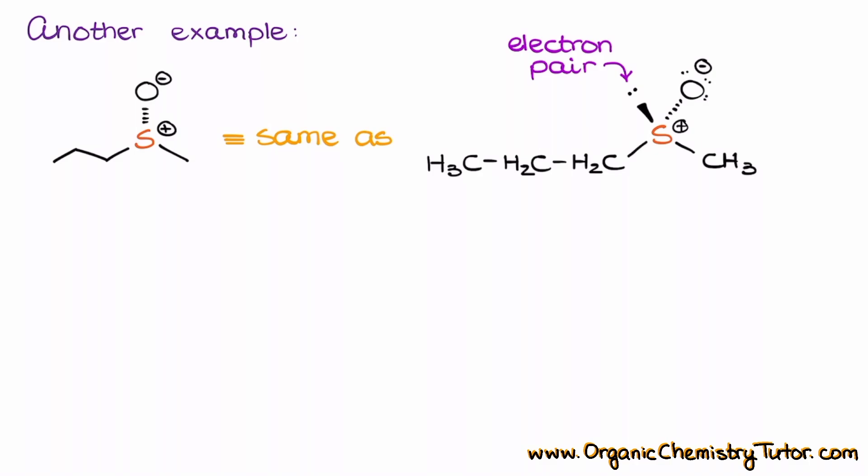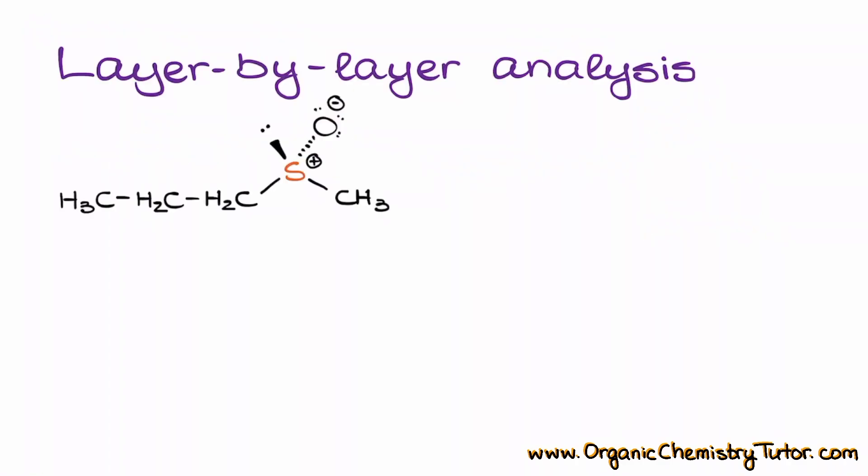Always remember that any kind of stereocenter that you are dealing with is always going to have a structure where we have two plane lines, one wedge, one dash, and we can draw it like this or we can draw it in the other direction like that, which is exactly the same thing. So, once I have my groups assigned and when I have the groups directionality plainly shown, I can go ahead and assign the priorities to my group. Here is the molecule redrawn one more time just so we have a little bit more space to work on, and this is what I get once I assign priorities to the groups that are connected to the sulfur atom.